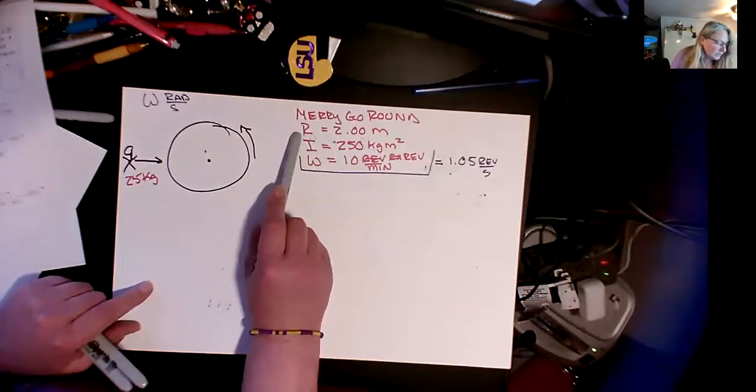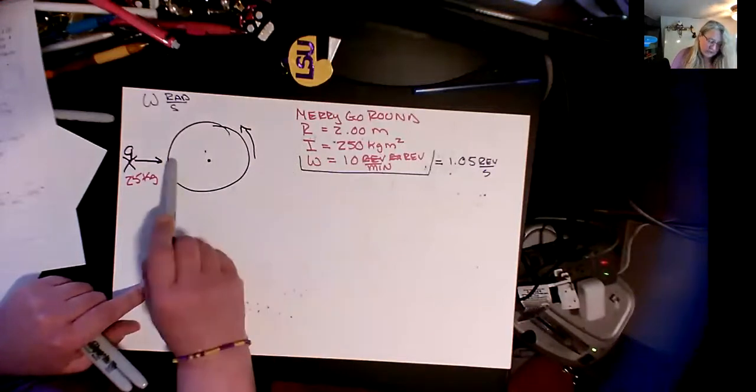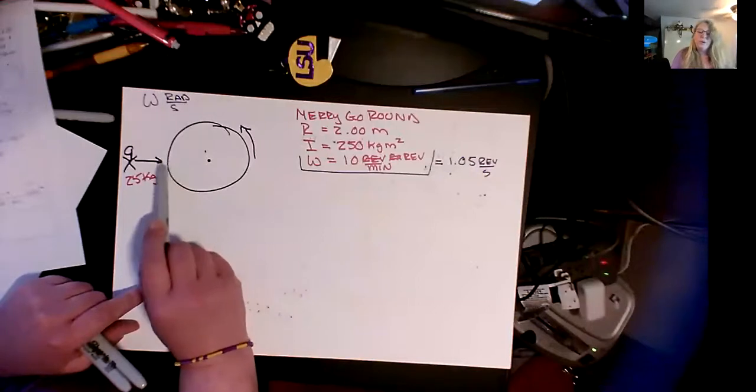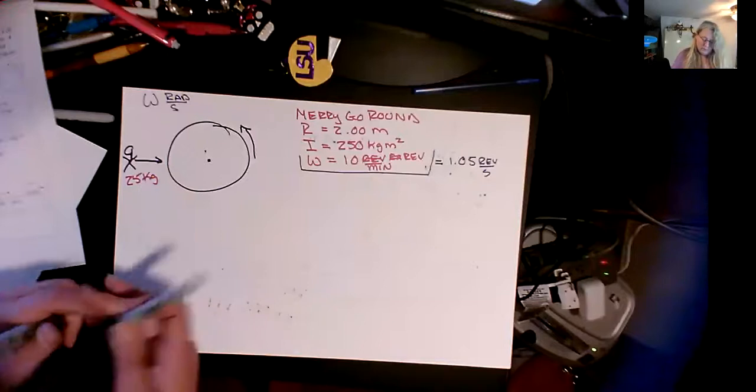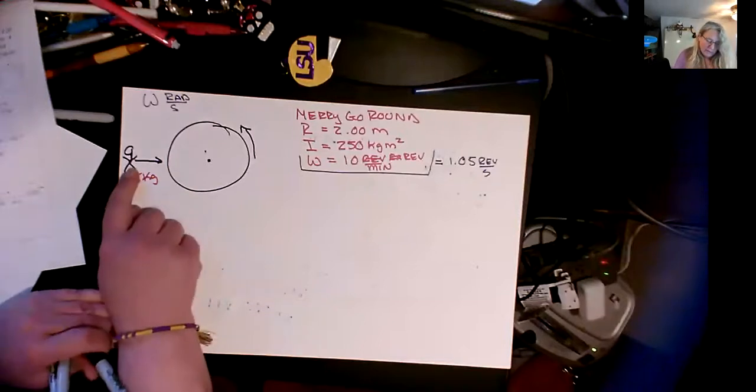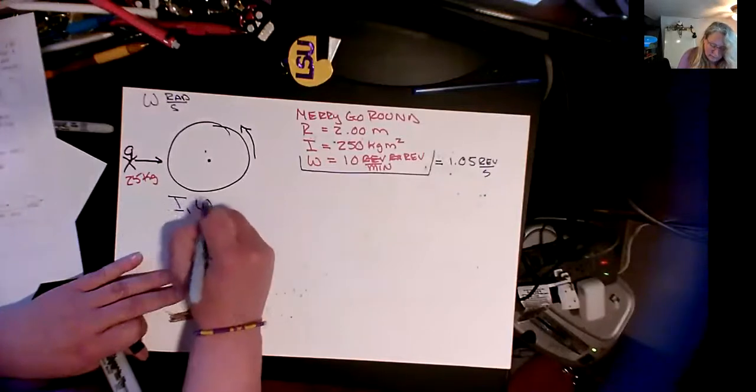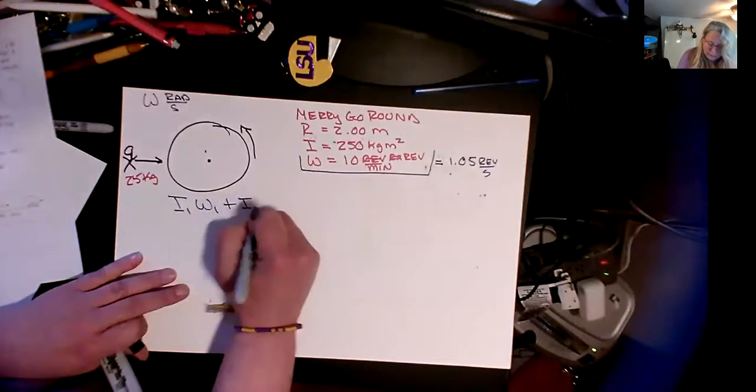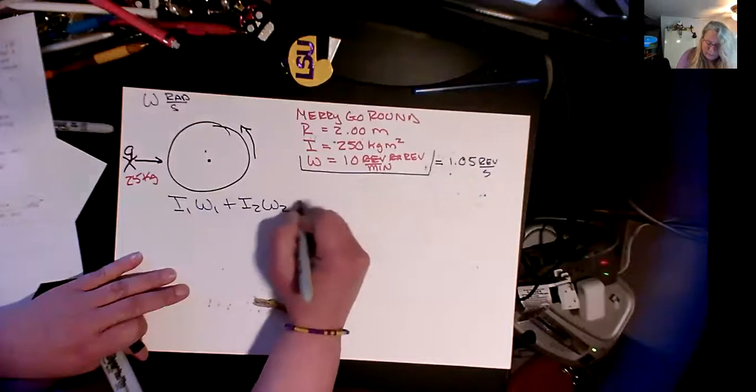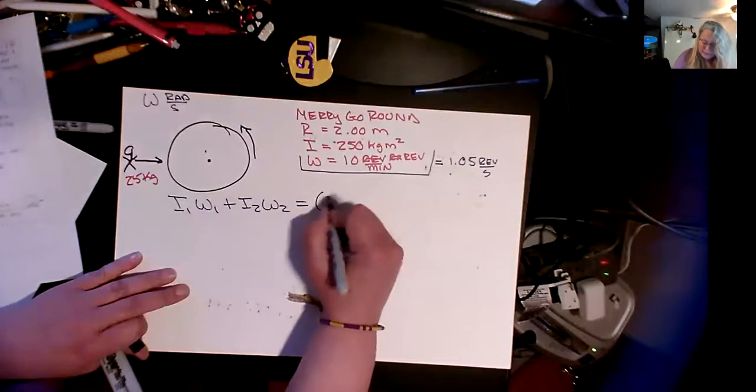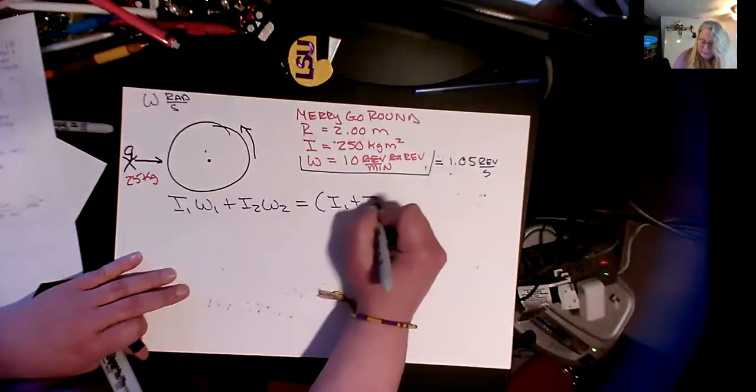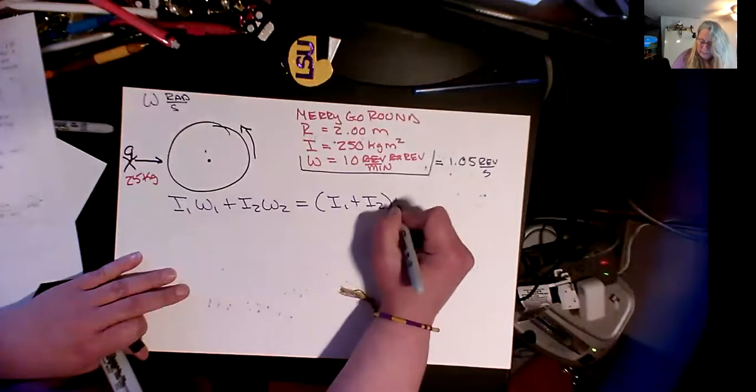But generally what it says, yep, child's going to sit on the outside edge. So this radius here is going to matter for where the child is. So let's think about that. Running at, let's write it out first of all. I have i₁ω₁ plus i₂ω₂ equals, they're sticking together, i₁ plus i₂ times ω final.